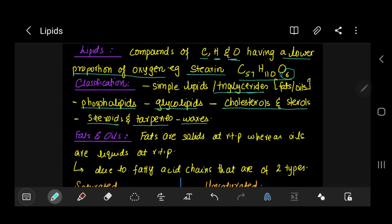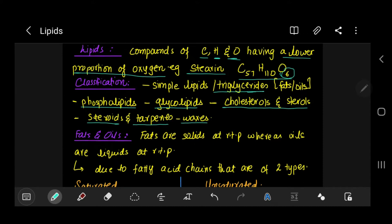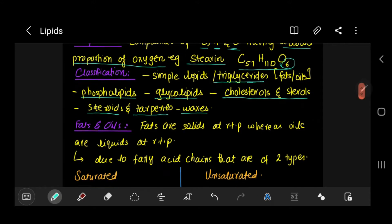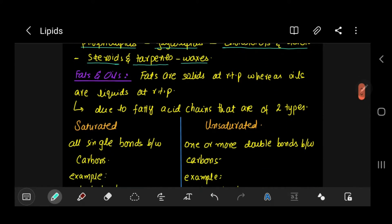Now lipids can also be described as organic molecules which are insoluble in water. The most familiar lipids are fats and oils. Fats are solids at room temperature, whereas oils are liquids at room temperature. There's a reason behind that, and we'll study this. So let's first study two types of fatty acid chains.